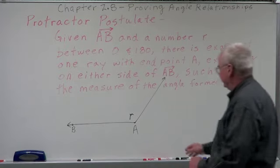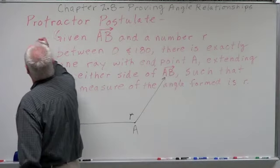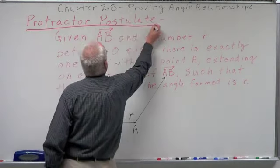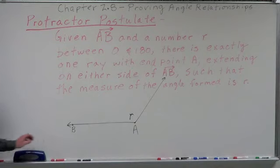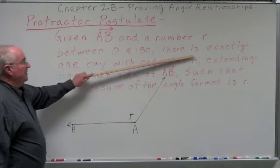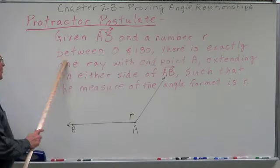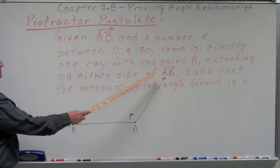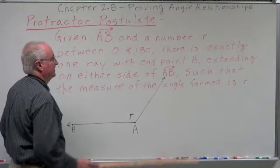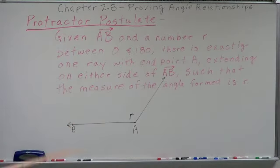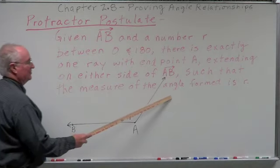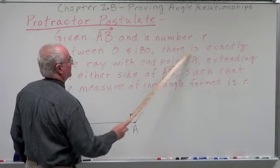This protractor postulate is what it says. Given a ray AB and a number R between 0 and 180, there is exactly one ray with an endpoint at A extending on either side of ray AB such that the measure of the angle formed is the number R.